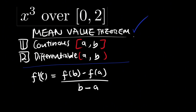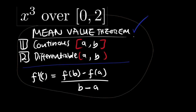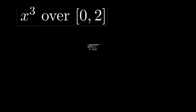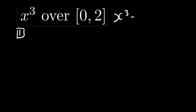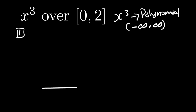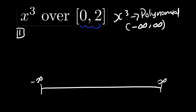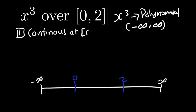Let us see how we can solve question number one and find the value of c. First, we check: is the function continuous on the given interval? We have x cubed here, which is a polynomial. The domain of a polynomial is always negative infinity to infinity. The interval given is from zero to two, which is within the domain, so the first rule is fulfilled — the function is continuous on the interval [0, 2].